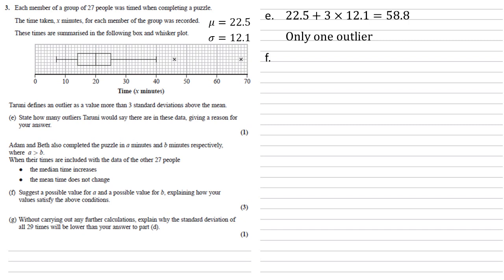For part F, we need to suggest a possible value for A and a possible value for B, explaining how our values satisfy the above conditions. The median time has increased, so for the median time to increase, both values need to be larger than the current median of 20. We also know the mean time does not change. For that to be the case, the mean of A and B has to be the same as the current mean of 22.5, or they would need to add together to give 45. We just need any two values for A and B that match those two. I've gone for A equals 23 and B equals 22. There are plenty of other values that would fit. Just make sure your A is larger than your B.